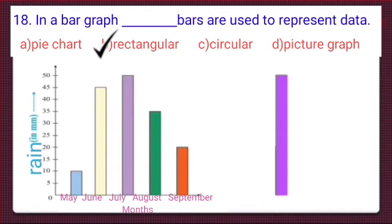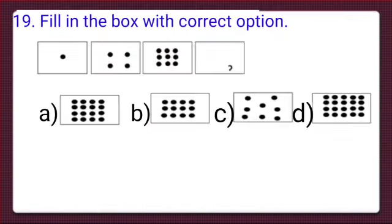Here is the 19th question: fill in the box with the correct option. We can see here we have 4 boxes. In the first box there is 1 dot, in the second box there are 4 dots, in the third box there are 9 dots, and the fourth box is empty and we have to fill it.